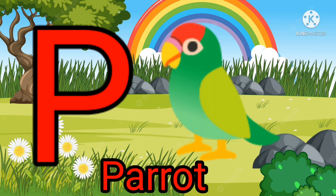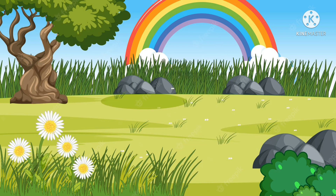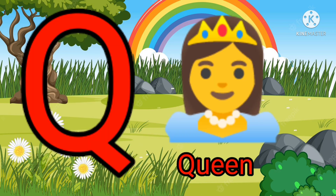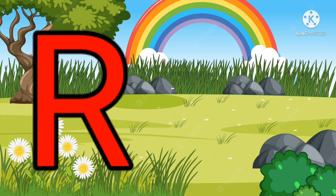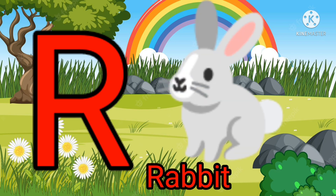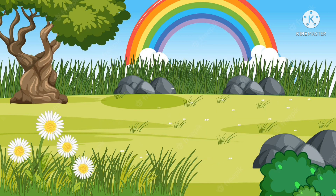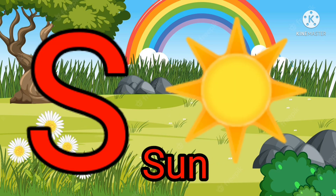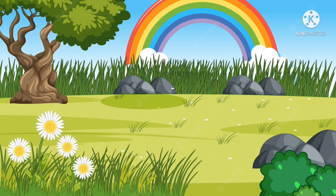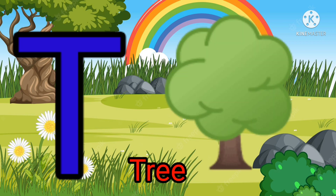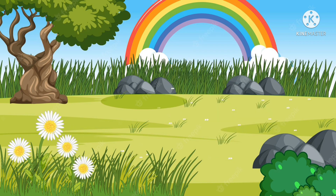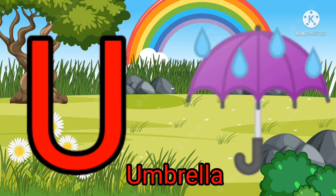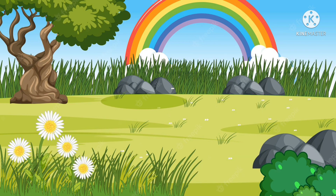P, P for parrot. Q, Q for queen. R, R for rabbit. S, S for sun. T, T for tree. U, U for umbrella.